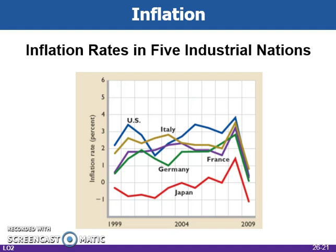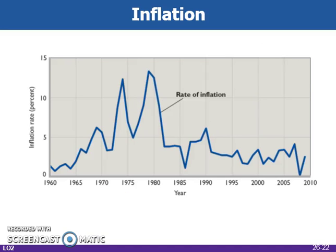This global perspective shows the inflation rates of five different countries. You can see that for the United States, the inflation rate has been generally slightly higher than the other countries. This figure shows the inflation rate in the US from 1960 to 2010. Notice the large spikes in the 70s, which are a result of several factors including the oil embargo and other economic shocks.